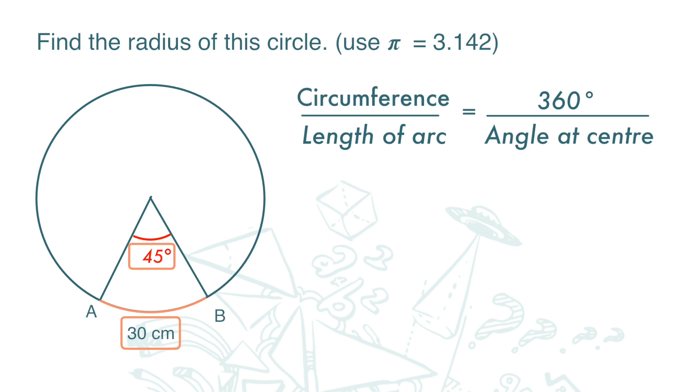Now we plug in the numbers. Circumference is 2 times 3.142 times r. Length of arc is 30. Angle at center is 45.